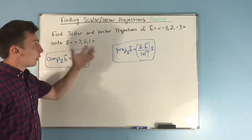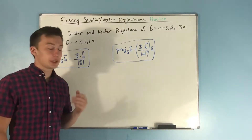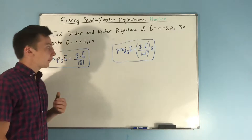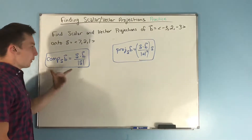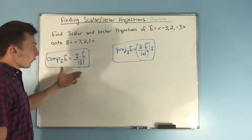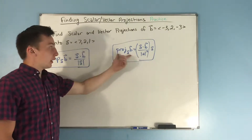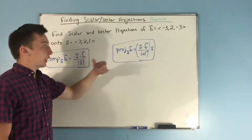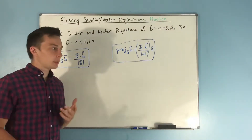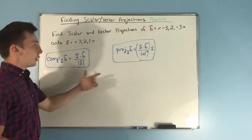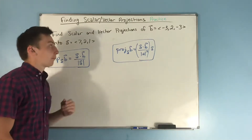In this video, we're going to be doing some practice with finding scalar and vector projections. In the last video, we went over what the component — also known as the scalar projection — and the vector projection actually are and what they're representing. Now we're just going to be doing some more practice finding them both.